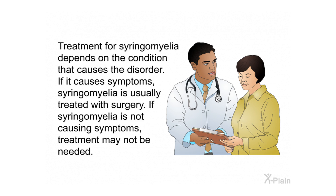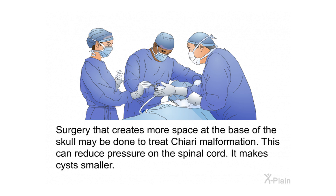Treatment for syringomyelia depends on the condition that causes the disorder. If it causes symptoms, syringomyelia is usually treated with surgery. If it is not causing symptoms, treatment may not be needed. Surgery that creates more space at the base of the skull may be done to treat Chiari malformation, reducing pressure on the spinal cord and making cysts smaller.